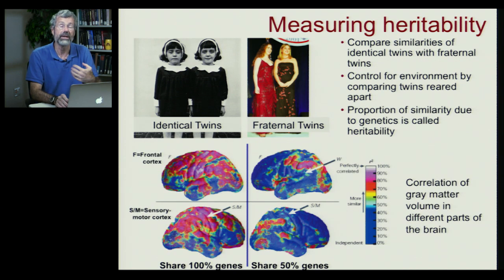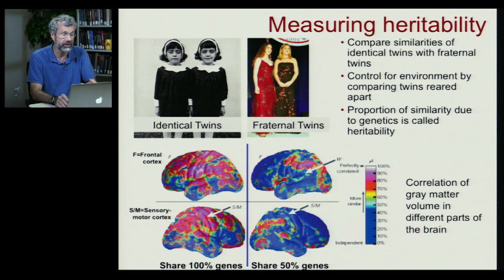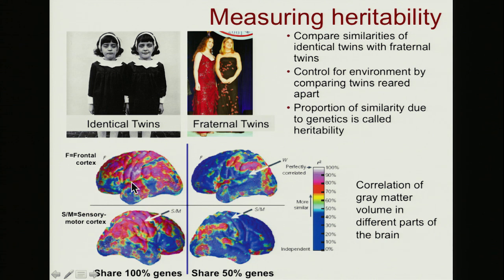In thinking about behaviors, we assume that these originate inside our brains. So let's look at how similar the brains of fraternal versus identical twins are. Maps of the similarity of brain gray matter in the frontal cortex and sensory motor cortex show that the mass of gray matter is extraordinarily similar in identical twins — they have almost the exact same brains — whereas fraternal twins are similar too, but not nearly as similar. So we know that the very substrate of our behavior, our brain, has a very high heritability.